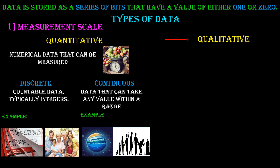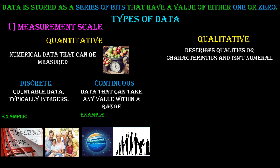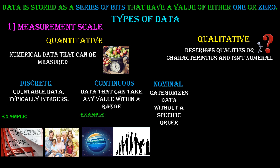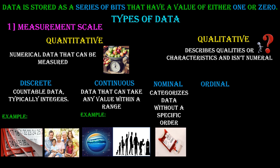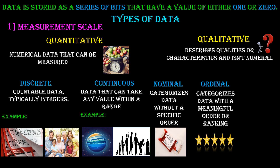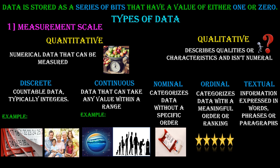Qualitative data describes qualities or characteristics and isn't numerical. It focuses on understanding the what and why rather than just how much. It can be classified as nominal data — categorizes data without a specific order, for example hair color and blood type. Ordinal data categorizes data with a meaningful order or ranking, for example movie ratings. Textual data is information expressed in words, phrases, or paragraphs — examples include comments, articles, and tweets.